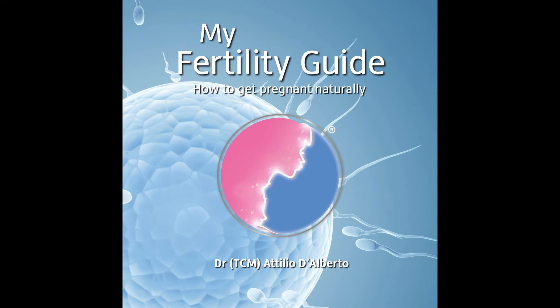Follicles and Eggs. At birth, a woman will have between 500,000 and a million follicles, each containing an egg. Incredibly, with a woman ovulating just once a month from puberty to menopause, fewer than 500 of the 500,000 to a million eggs will reach ovulation. During each menstrual cycle, around 10 to 20 follicles are stimulated at once, with generally just one becoming dominant and ovulating.